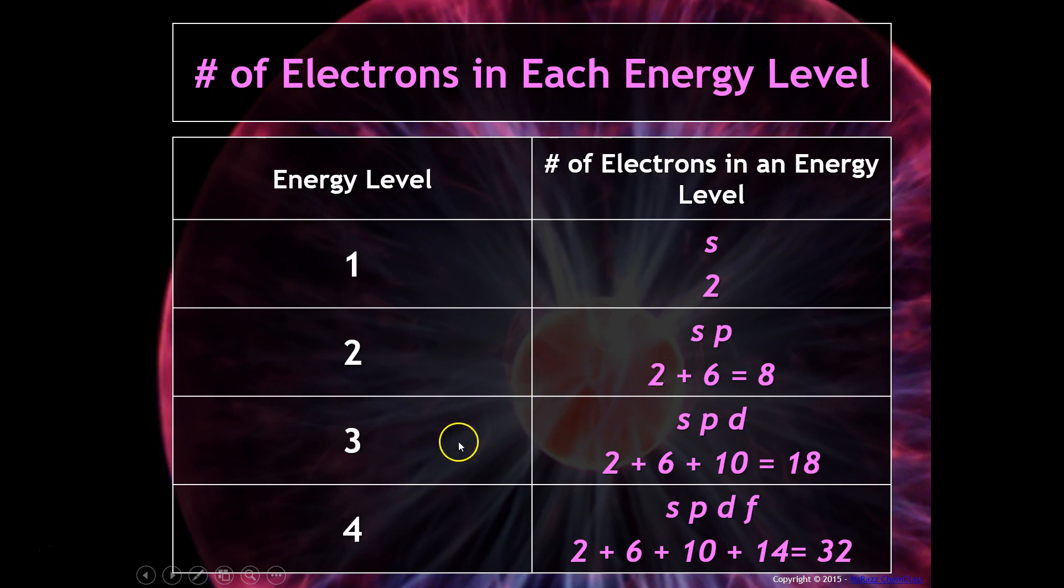Same thing with energy level three. With energy level three, we have 3s, 3p, and 3d. The s can hold two electrons, p can hold six, and d can hold ten. Again, whether the p is 3p, 4p, or 2p, p will always hold six electrons, for a total of eighteen electrons in that energy level.